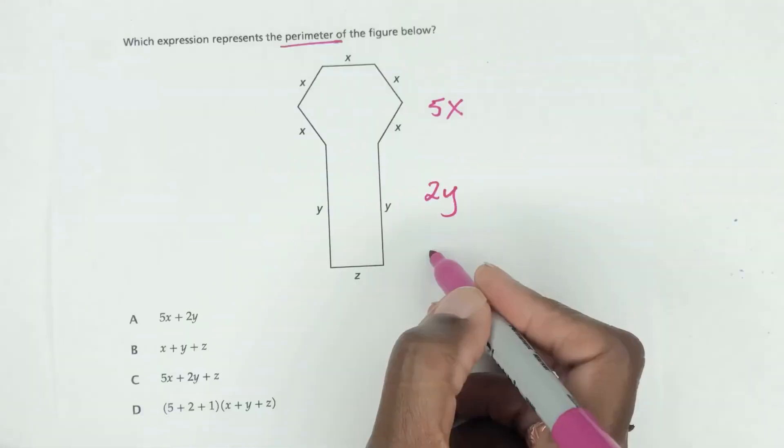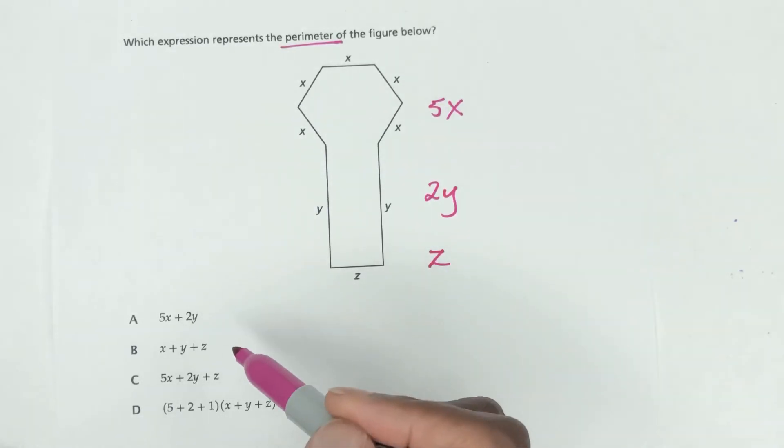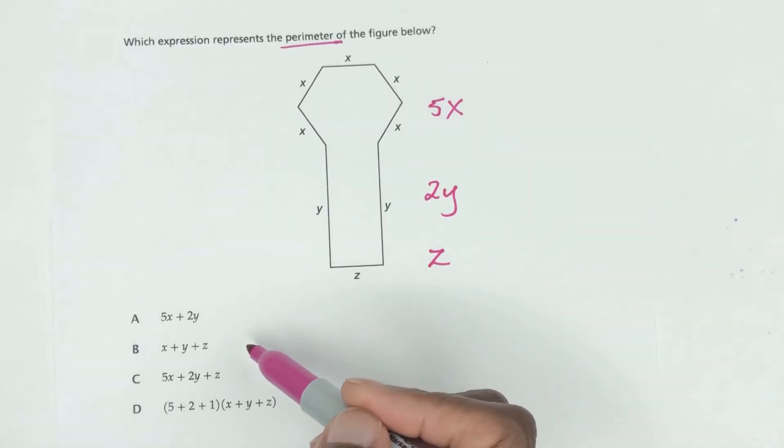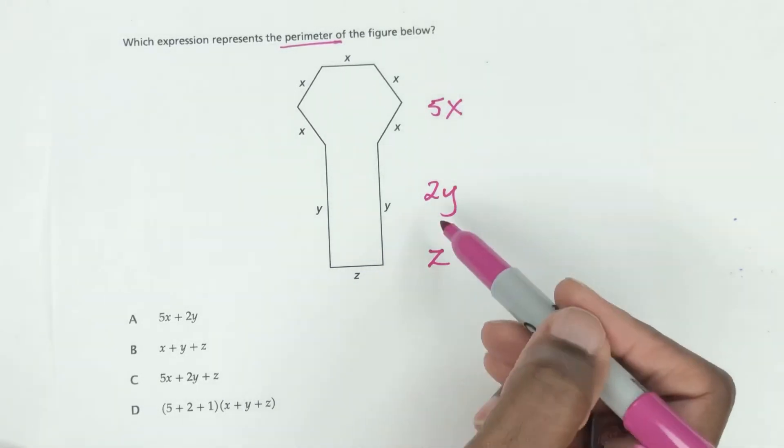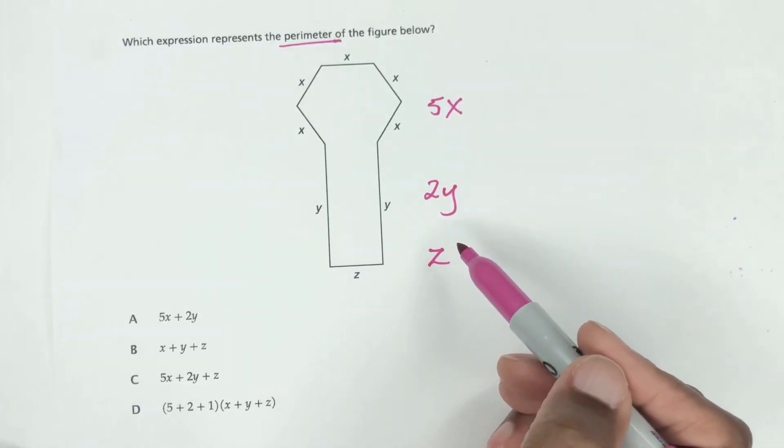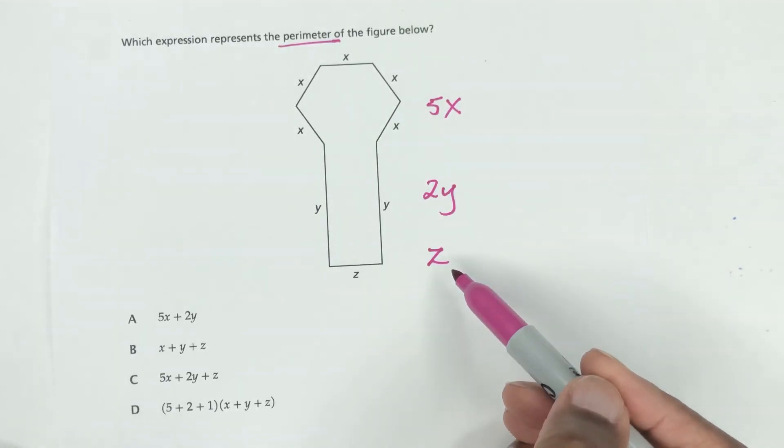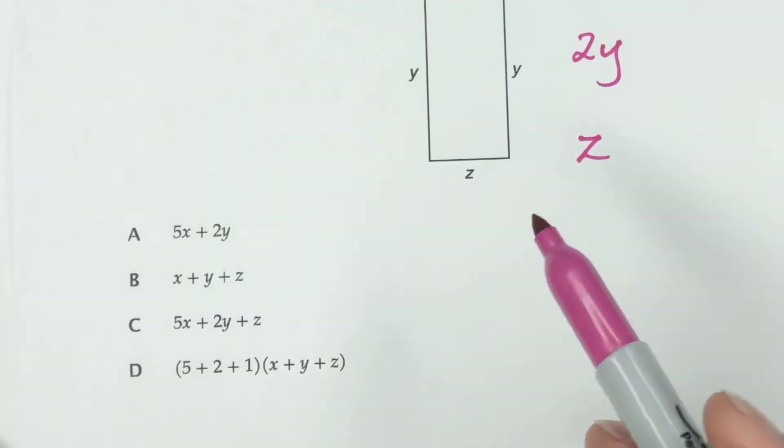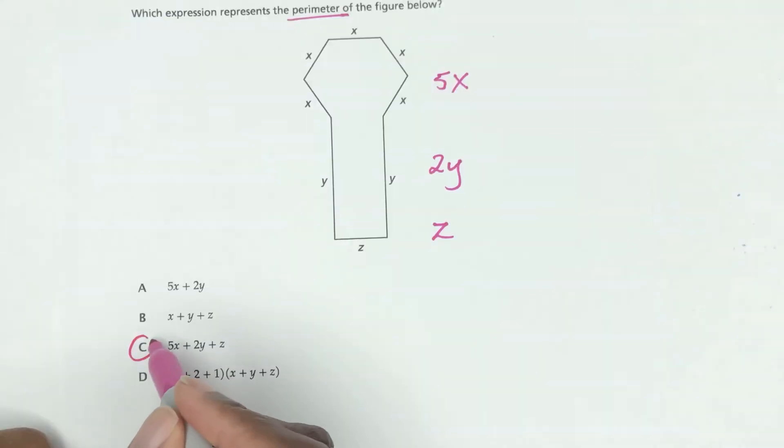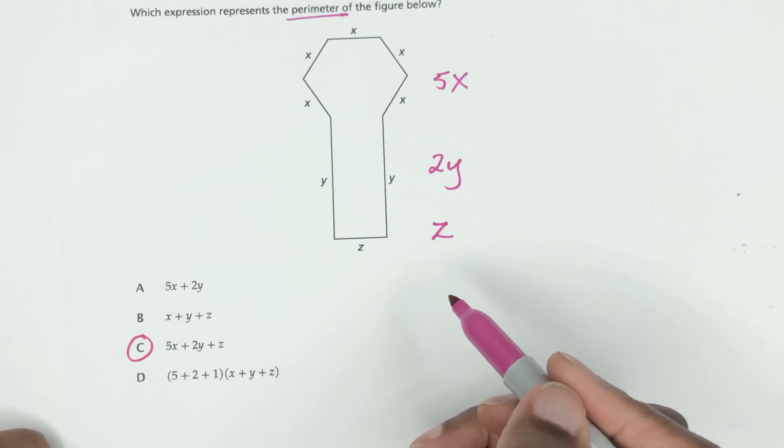And how many z's? There's just 1 z. So when you look at your choices here you're able to look to see what matches these expressions on the side here. So 5x plus 2y plus z, can you see it right here? The answer for this, very simple, is C.